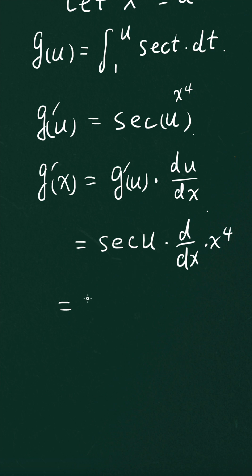So the final result is secant of x raised to the fourth power times 4 times x raised to the third power. I'll see you guys next time. Take care.